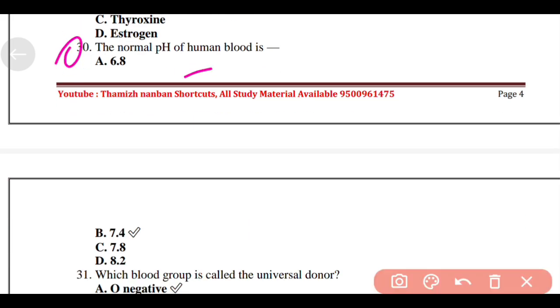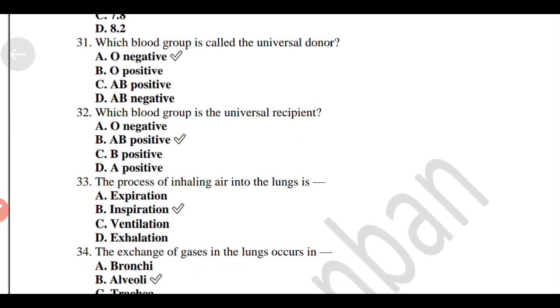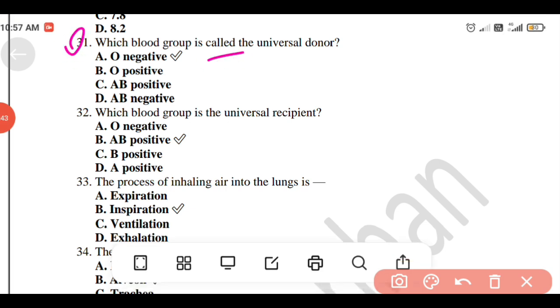The normal pH of human blood is Option B, 7.4. Which blood group is called the universal donor? Option B, O negative.